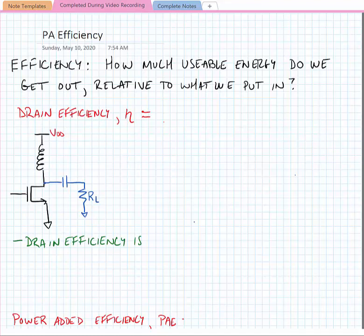We have a couple of different metrics for efficiency in a power amplifier. The first is drain efficiency, sometimes labeled with the variable eta. Eta is equal to the output power divided by the DC power consumed in the drain of the transistor.